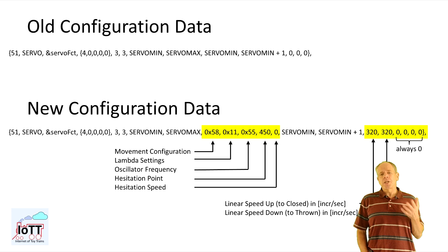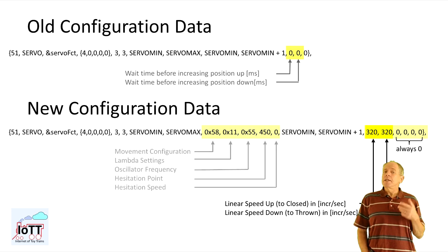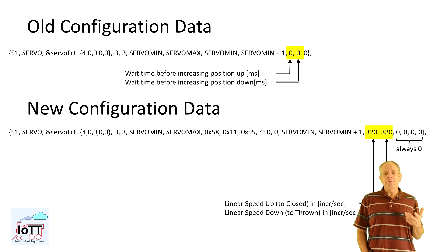The first thing I changed is the way how the servo speed is defined. In the old version it was the time between two incremental steps of the servo. That was okay at the time, but for more sophisticated movements I needed real speed. So I changed that into increments per second.